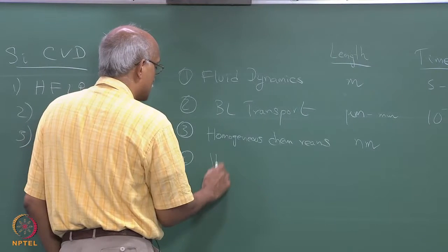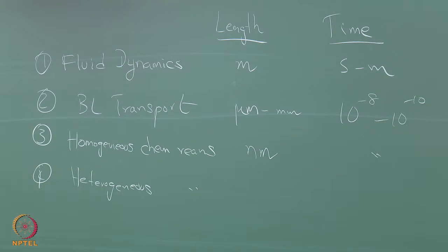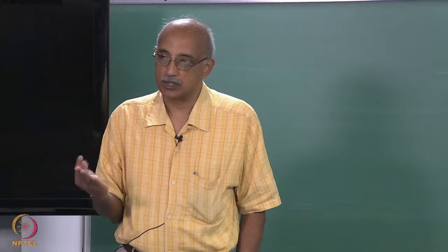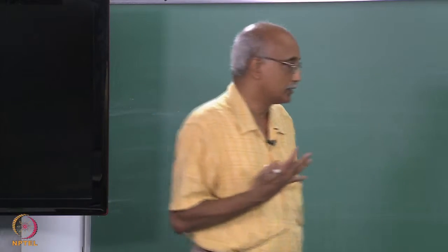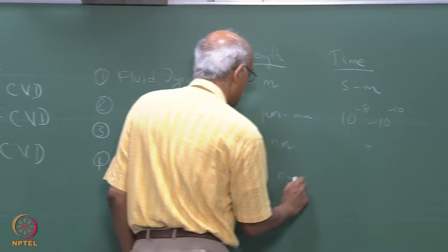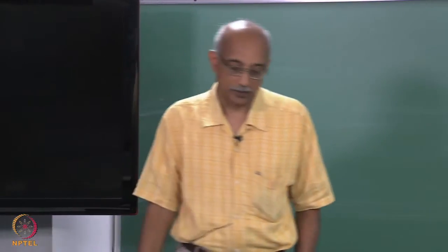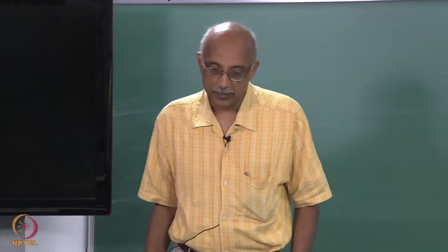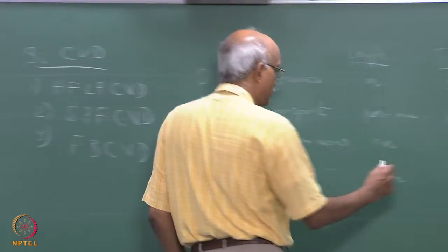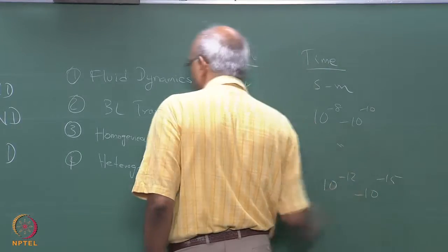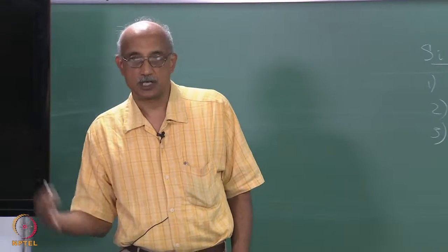In the case of heterogeneous chemical reactions, again the gas phase molecules have to get very close to the substrate or solid surface on an atomic scale, so here again in terms of length scales we are talking about nanometers. However, heterogeneous reactions typically proceed much faster than homogeneous reactions because there is a lower activation energy barrier. The time scales here can be of the order of 10^-12 to 10^-15 seconds. Especially as you drive towards equilibrium, the reaction is virtually instantaneous.